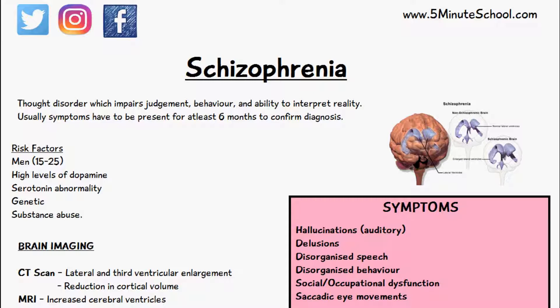The risk factors involved for schizophrenia include men who are between 15 to 25 years of age — they have the highest risk. People with high levels of dopamine and abnormalities with their serotonin are also at risk. Schizophrenia is also said to have a genetic predisposition, so if you have a family member like a mother or father who has been diagnosed with schizophrenia, you are more likely to also have schizophrenia in comparison to someone who does not have the disorder in their family.